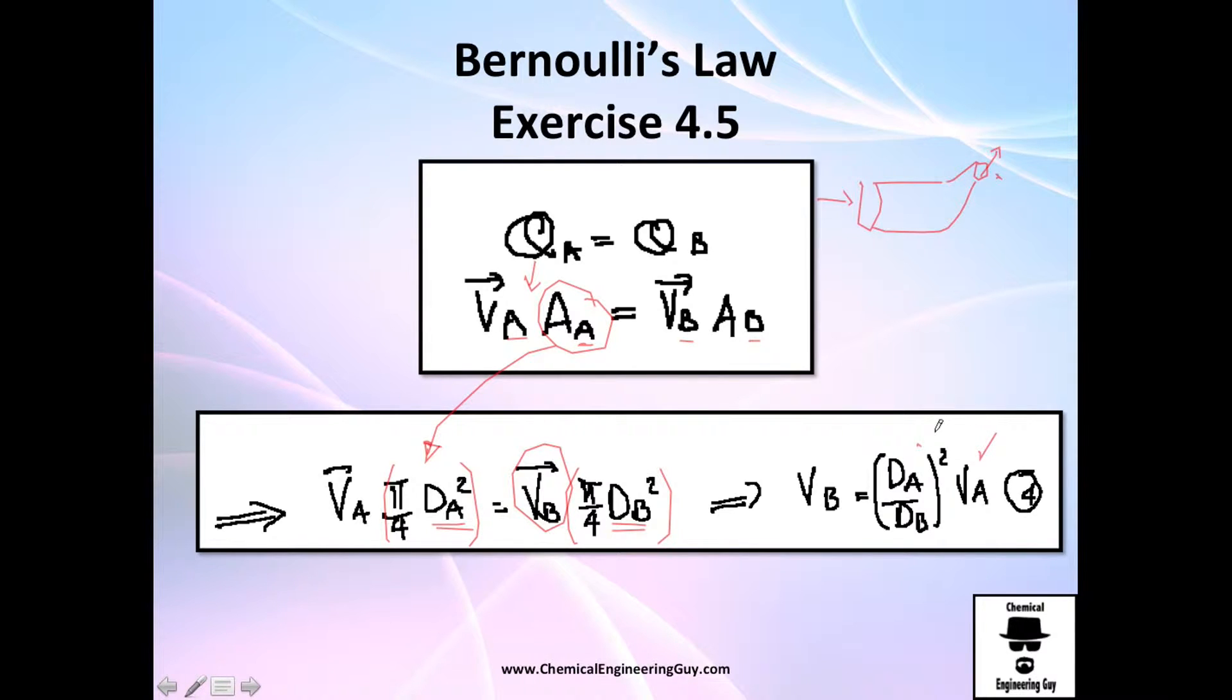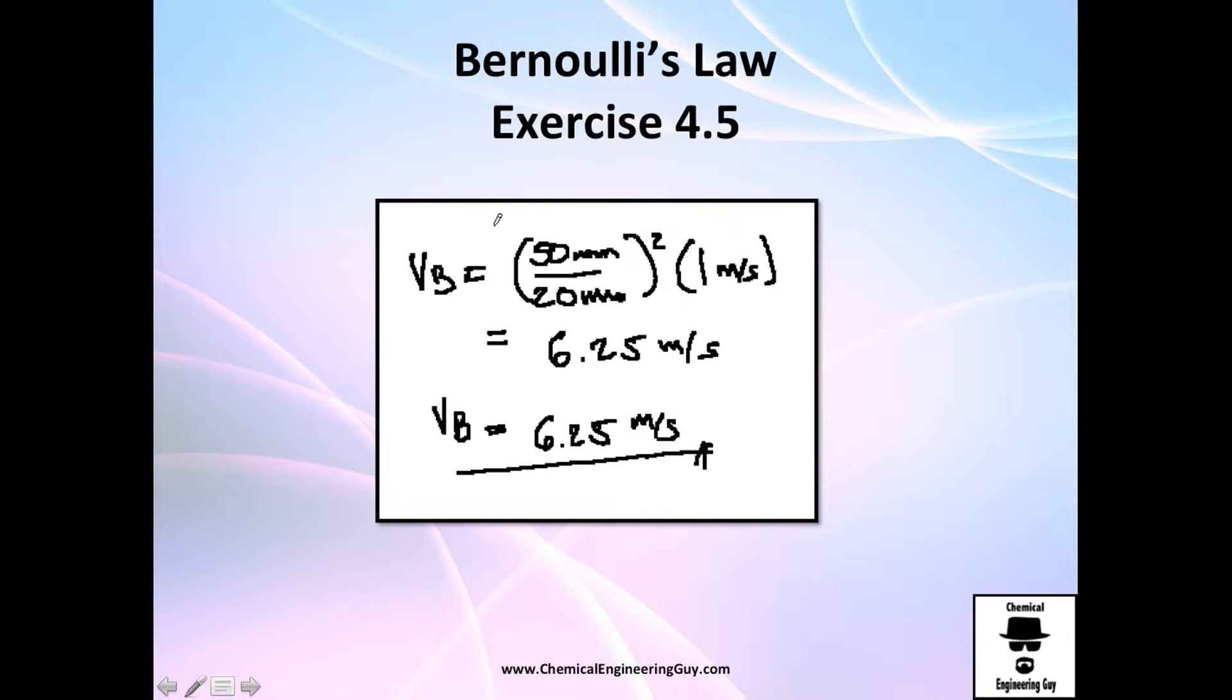We've got velocities and diameters, so it's only a matter of substituting: 50 millimeters and 20 millimeters. Actually, you could change to meters but you don't need to because they're in the same unit. 50 and 20 times 10 to the minus 3 will cancel each other and you'll get exactly the same number.